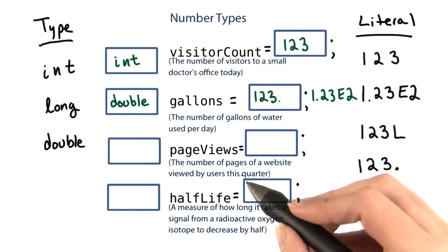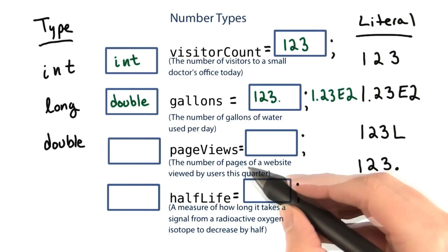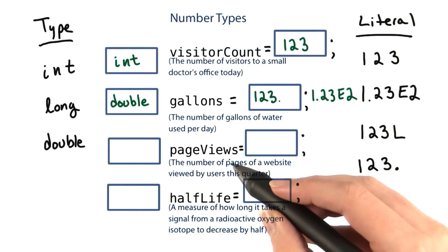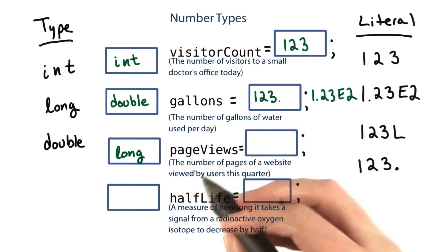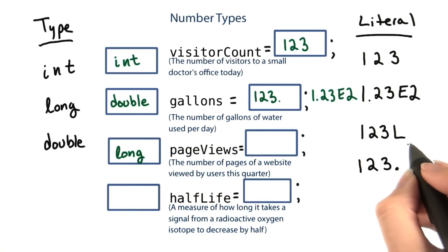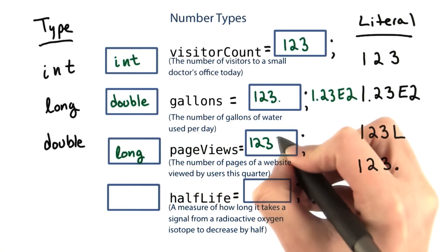Page views, or the number of pages of a website viewed by users this quarter, could be a very large number. Think about how many YouTube videos get watched. But it has to be an integer number because it's a count. So I would use a long. And when you initialize a long, you would use something like 123L.